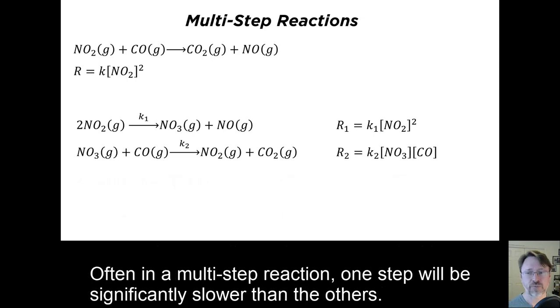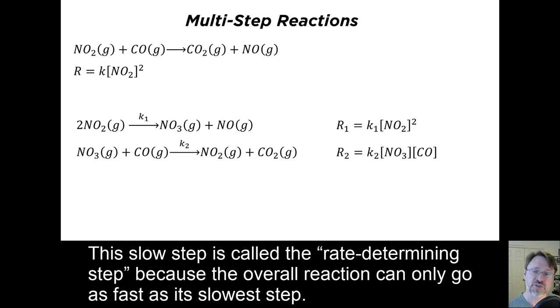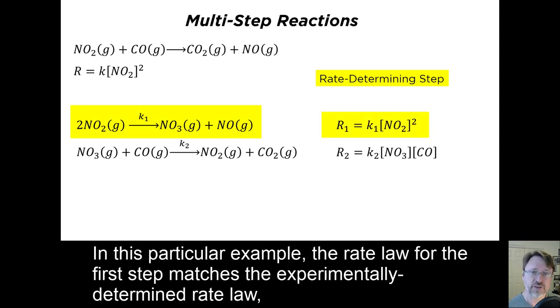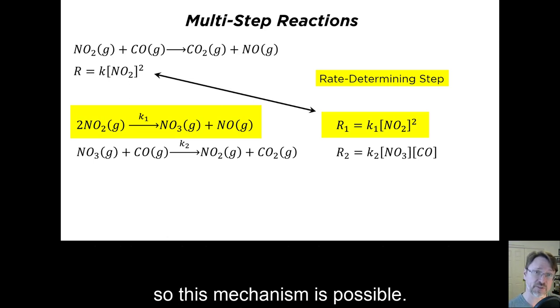Often in a multi-step reaction, one step will be significantly slower than the others. This slow step is called the rate-determining step, because the overall reaction can only go as fast as its slowest step. First, let's suppose that the first step is rate-determining. That would mean that the overall reaction rate is determined by that first step. In this particular example, the rate law for the first step matches the experimentally determined rate law, so this mechanism is possible.